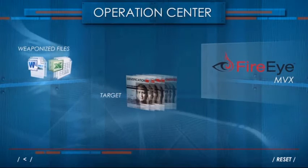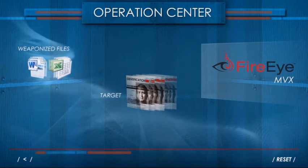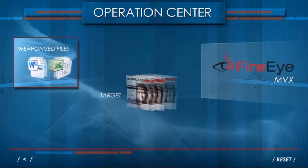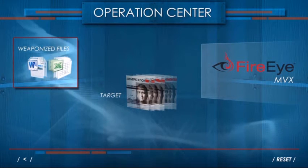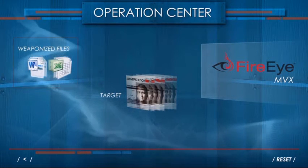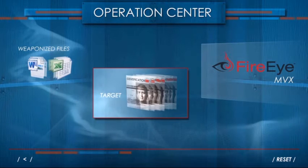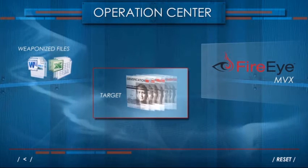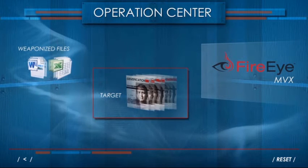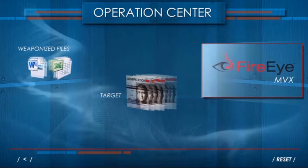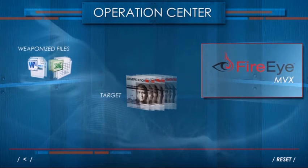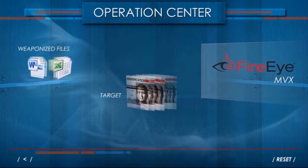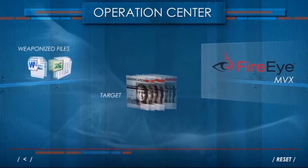Let's connect to our demo operations center. On the left, we have a Word document and a spreadsheet which are weaponized. In the center, we have our target that is waiting to be victimized, and on the right, we have our FireEye MVX engine. Let's begin.